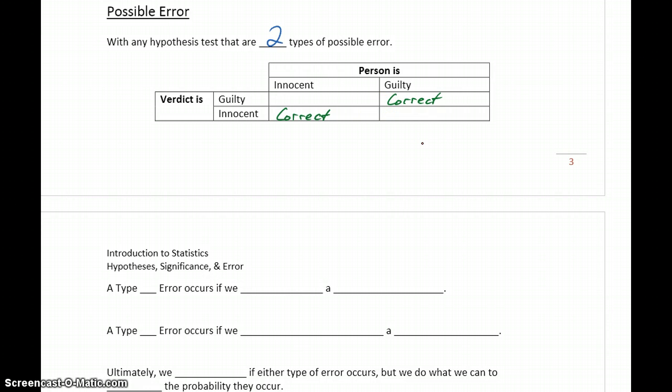Still in the context of that judicial case, if our person on trial is innocent and the verdict that's rendered is guilty, then we came to the wrong conclusion. We would refer to that as a Type I error. An innocent person being convicted.